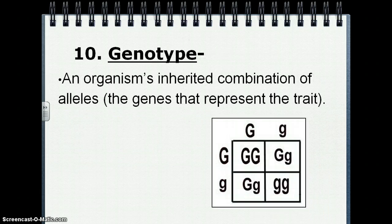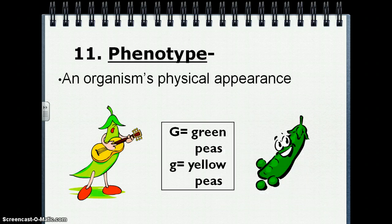Genotype is an organism's inherited combination of alleles — these are the genes that represent the trait. Phenotype is an organism's physical appearance.